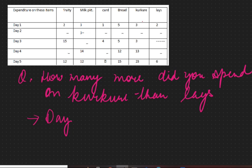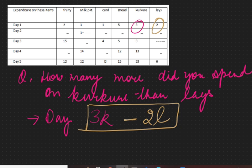You bought three kurkures, and for day one you bought two lays, so this much more you have spent. Why we wrote like this? Because we don't know the value of k.